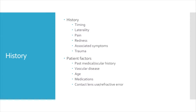Was there a trauma? Trauma can cause hyphema, which is blood in the anterior chamber of the eye, vitreous hemorrhage, retinal commotio, which is a bruise of the retina, or retinal detachment.